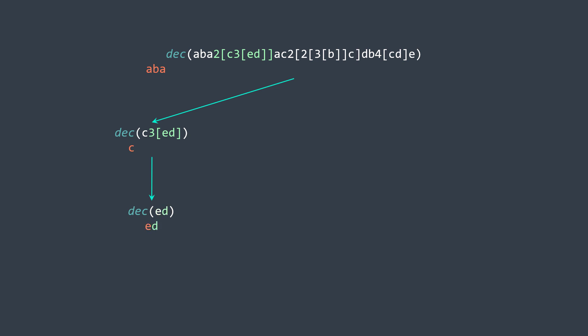Once we decode the inner expression, we repeat it three times because the integer before it is three, giving us ed ed ed. We finish decoding that expression, return it, and repeat it twice. Then we go back to the initial expression, continue with the remaining characters, and find another expression where the same process will happen.